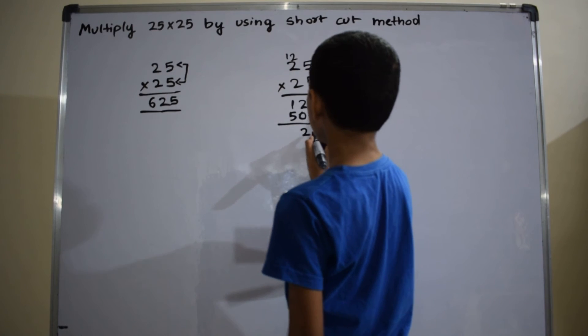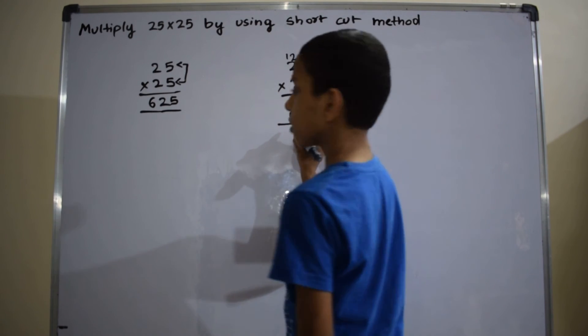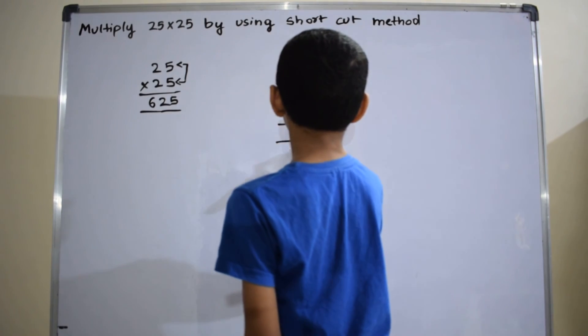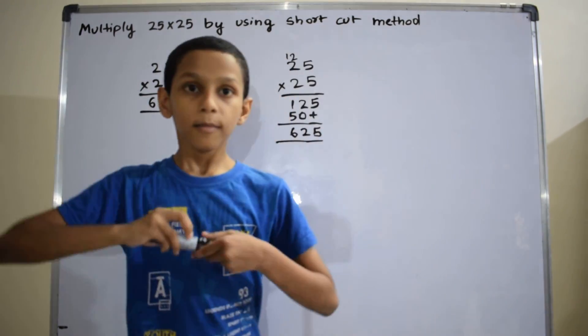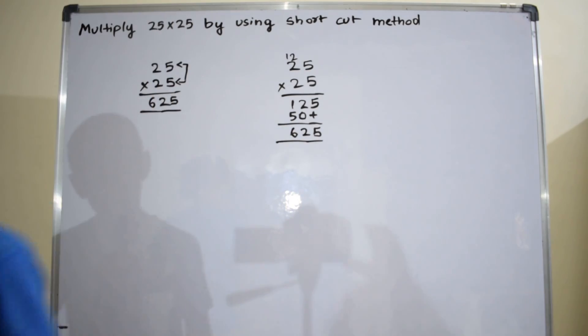Write here 5. 2 plus 0 equals to 2. 1 plus 5 equals to 6. Both answers are correct. So our answer is correct. Thank you, thanks for watching.